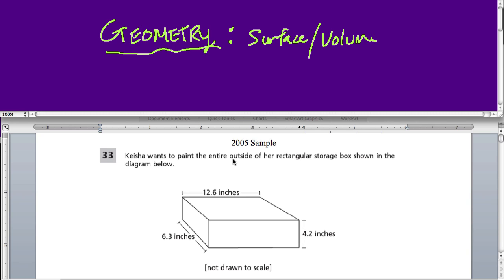It doesn't really matter who's painting it or what color paint we have, but it does matter that they're trying to paint the entire outside, not just the top or the sides, but the entire surface of this box. They want to use exactly enough paint to cover this shape. So that process of painting the surface requires us to think about the surface area.